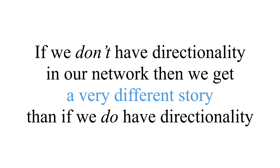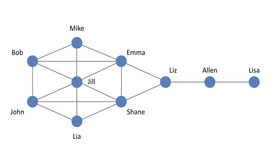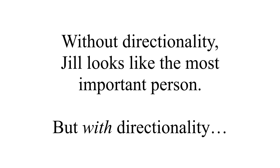But if we don't have directionality in our network, we can get a very different story than if we do have it. In our first example, we have Jill in the center of the network — not surprisingly, Jill has tons of connections and high overall degree centrality. If we think that having lots of connections is important, which we often do in networks, then Jill is probably a pretty important person.